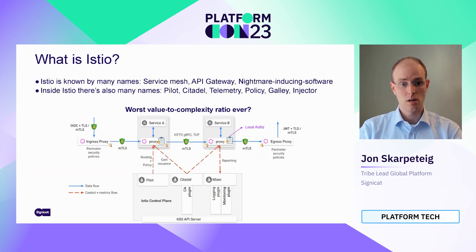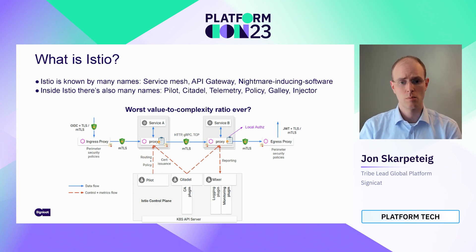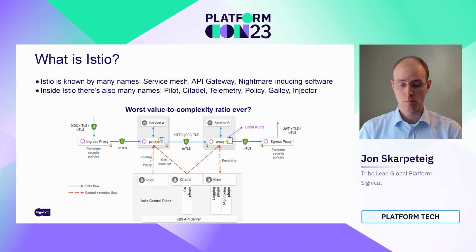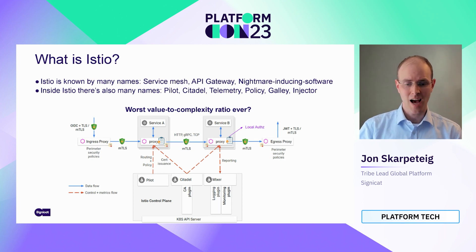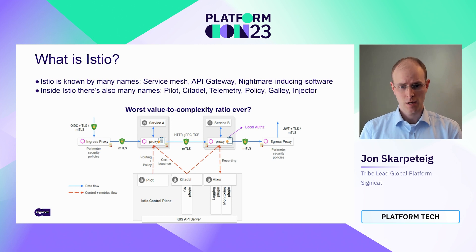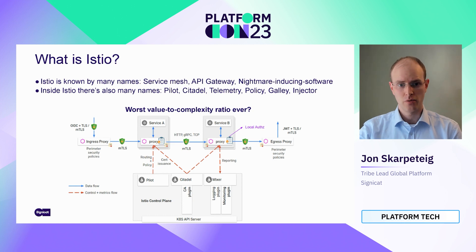What is Istio? It is known by a few names. Service Mesh is the most common one, but it's also an API Gateway. It also induces nightmares for those who operate it, and it has a number of internal names: Pilot, Citadel, Galley. There's a lot of features, there's a lot of complexity, to the point where it's named the worst value-to-complexity ratio ever.